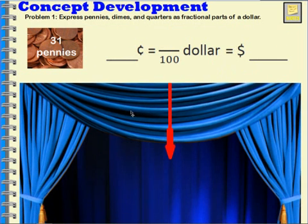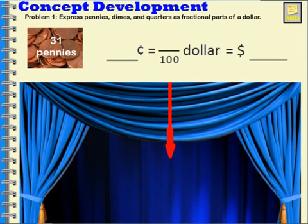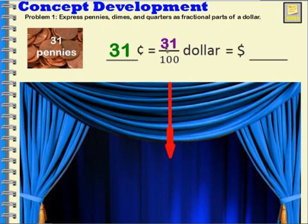What if we had thirty-one pennies? If we had thirty-one pennies, that would be equal to thirty-one cents, which is thirty-one hundredths of a dollar, and written with a dollar sign is zero decimal three one — thirty-one cents.